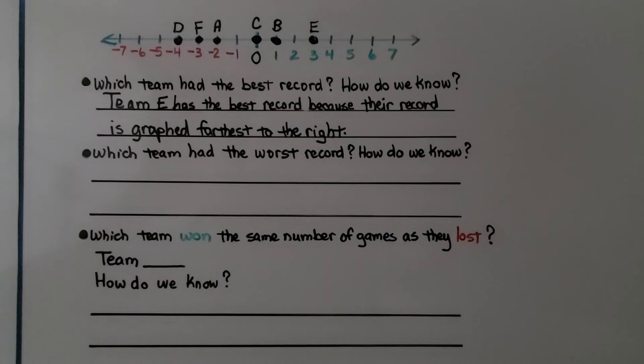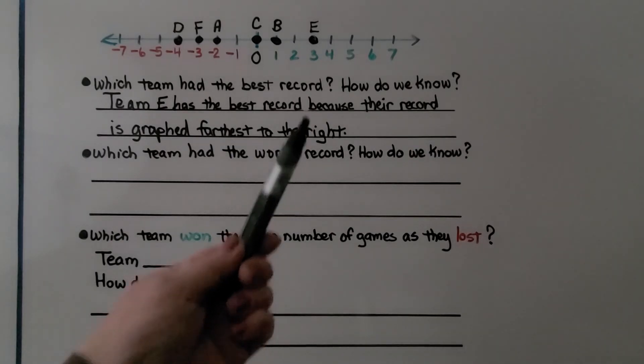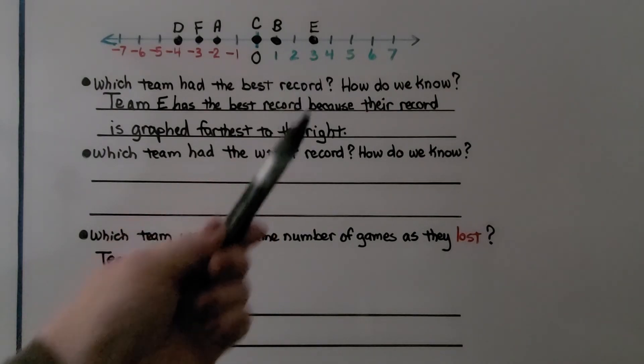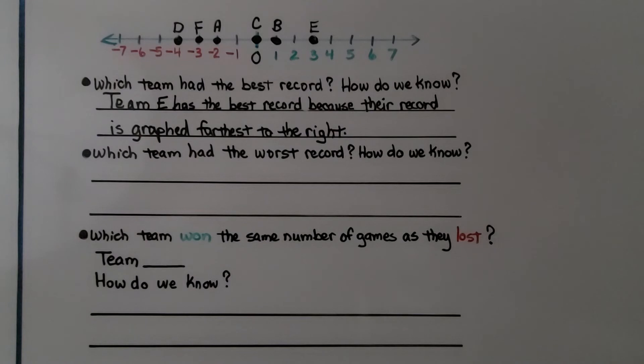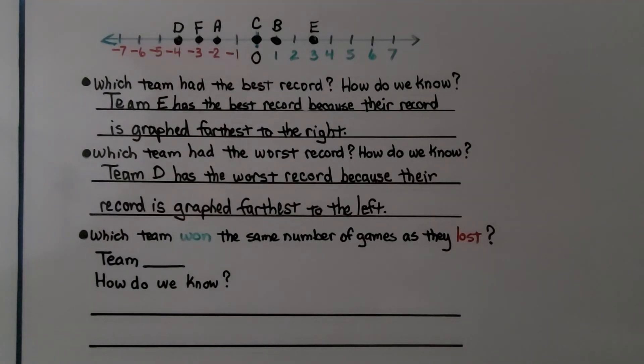So which team had the worst record and how do we know? Well, if the farthest to the right is the best record, the farthest to the left must be the worst record. Team D has the worst record because their record is graphed farthest to the left.